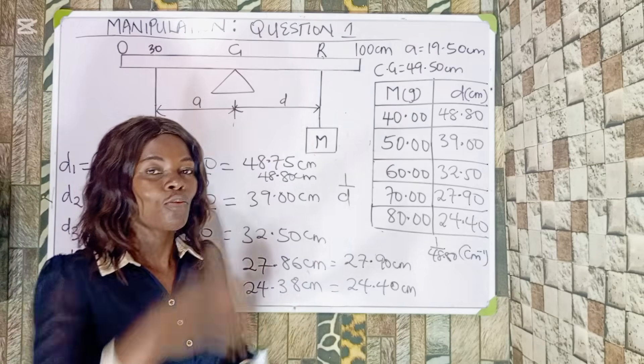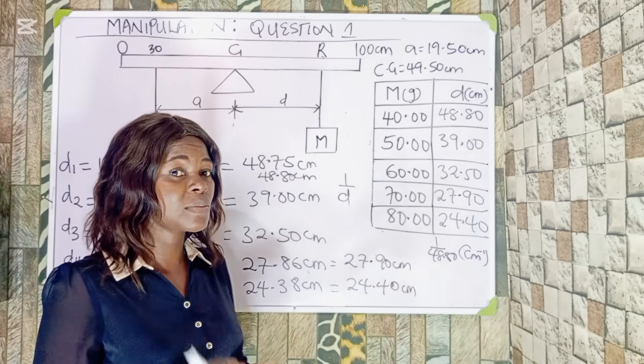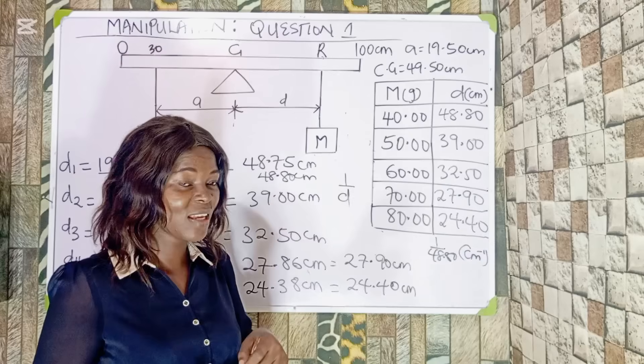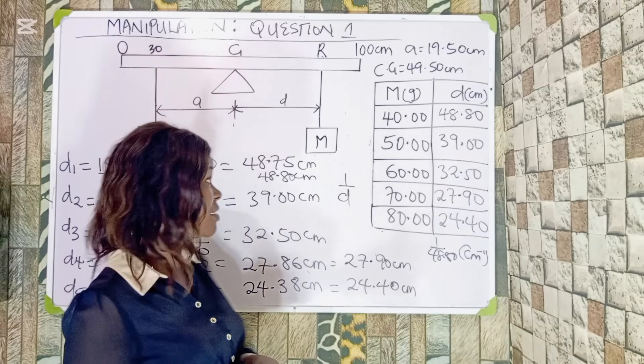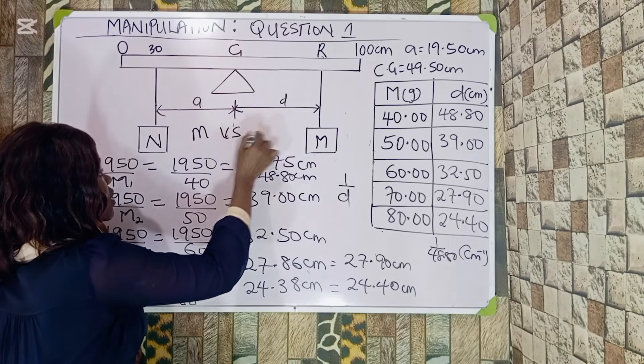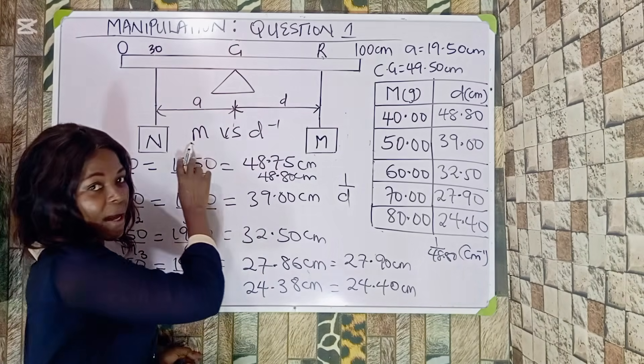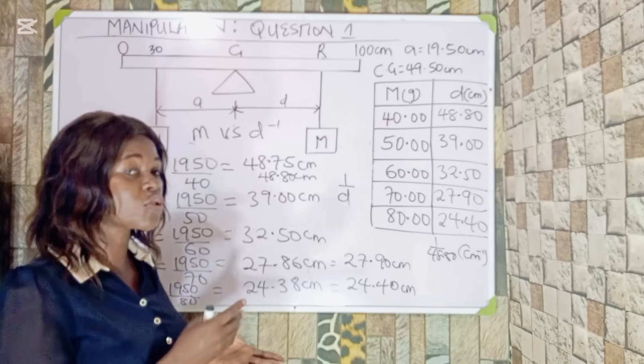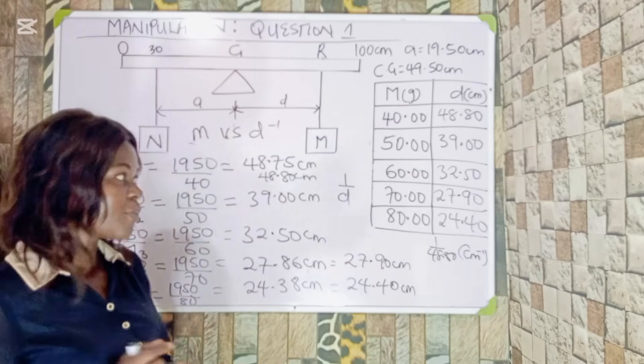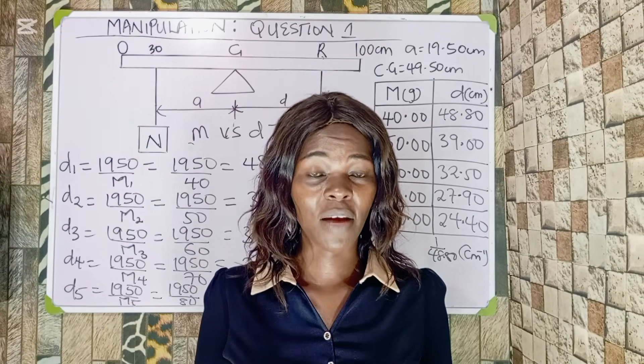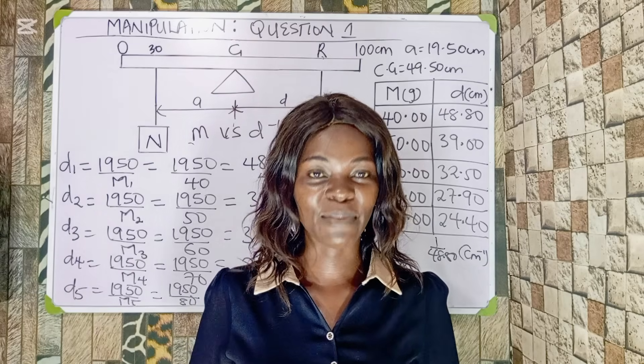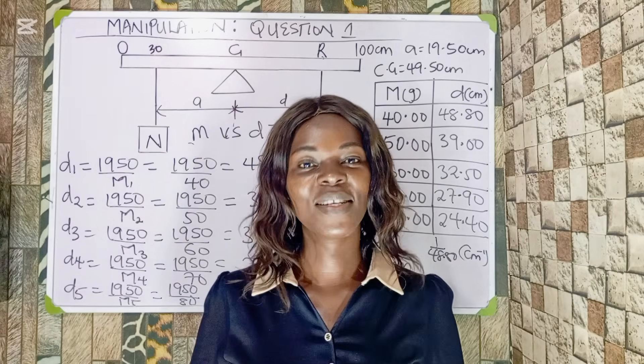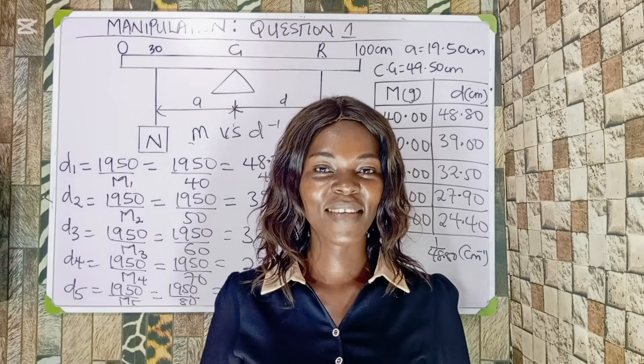If you want me to show you how to plot this graph, you can drop in the comment section. The graph is M versus D inverse. This would be on the vertical axis and this would be on the horizontal axis. With this, you can comfortably get your values, and remember the line of best fit. You can comfortably get your readings, plot your graph and snatch your A+. If this video was able to help someone, please don't forget to subscribe to this channel and turn on notifications. Do not forget to share so that other students preparing for this can see it and learn. I'll see you next time. Bye for now.